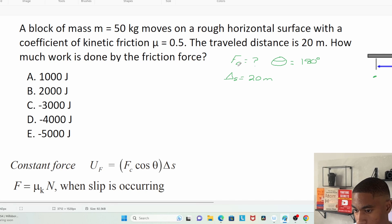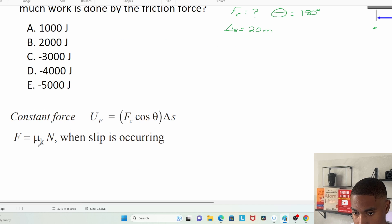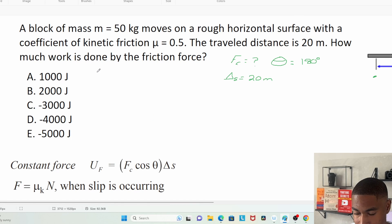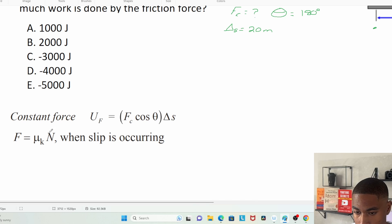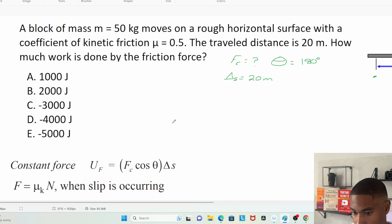How do we get F_c, our constant force? Well, we can get this by using the friction force formula. That friction force equals the kinetic friction μ times the normal force of the block. We do know that μ = 0.5.